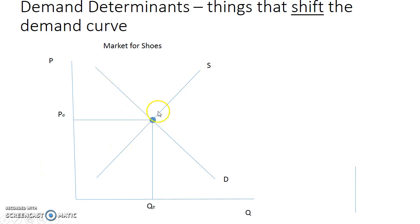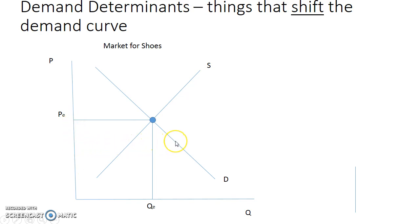You have this intersection here of supply and demand, and that's giving you your equilibrium price and quantity. So if it was a change in quantity demanded, that could be where the equilibrium price might drop, and then that hits over on the demand curve and you find an increase in the quantity demanded — this movement along the demand curve. However, when we talk about the demand determinants, these are things that are changing the actual demand curve.